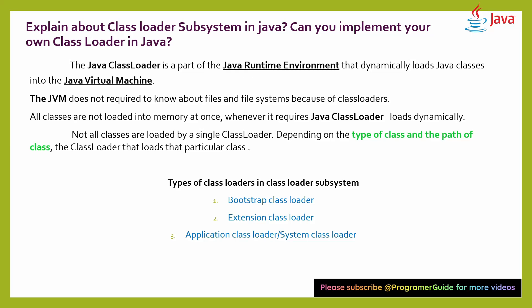Whenever it is required in the Java program, line-by-line compilation happens, and the class loader looks for whether a particular file exists or not. All classes are not loaded into memory at once — whenever required, the Java class loader loads dynamically. Not all classes are loaded by a single class loader; depending on the type and path of the class, the appropriate class loader is used. There are three types of class loaders: Bootstrap, Extension, and Application (System) class loader.